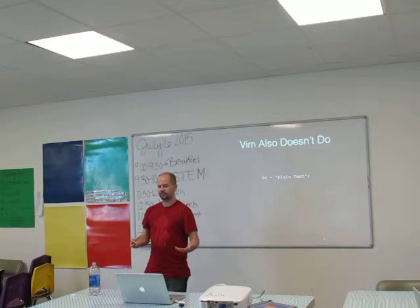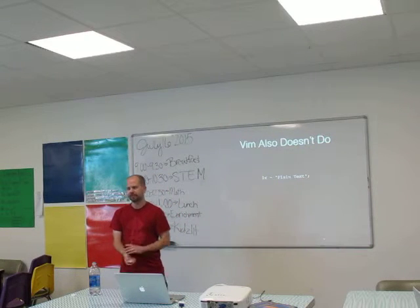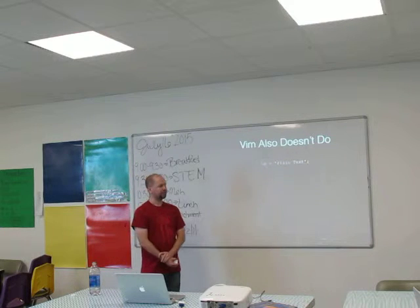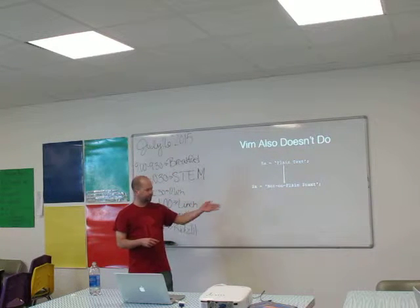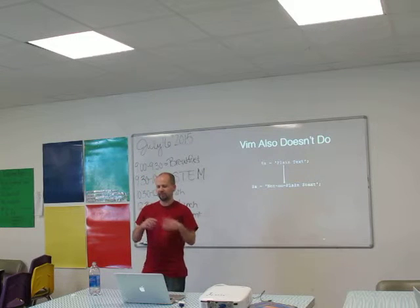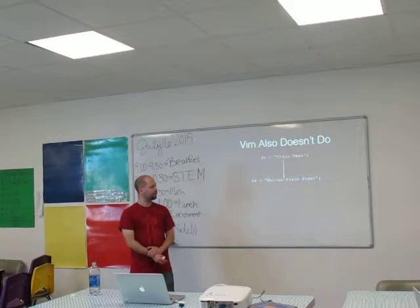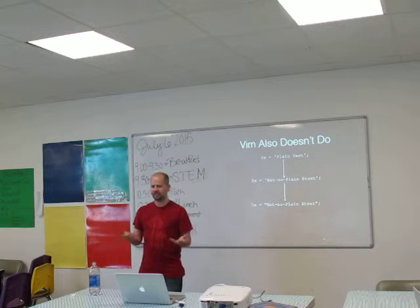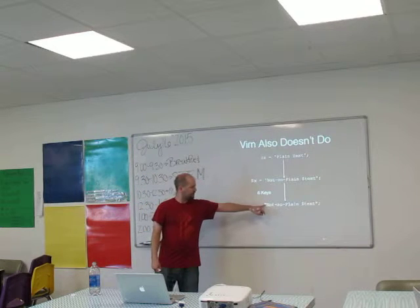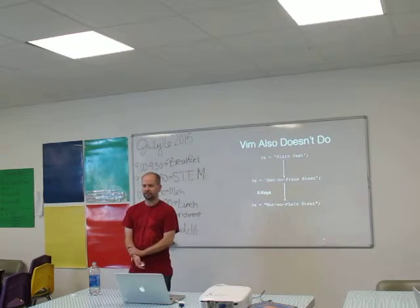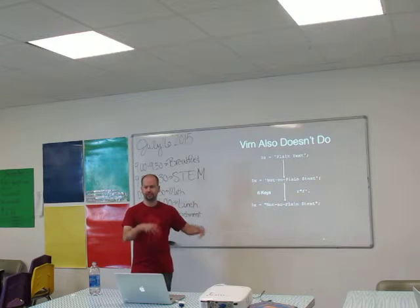Here's another example of something that's not as efficient as it could be in Vim. If you've got plain text and then you add a variable to it, in most cases you want the value of that variable, but with most languages single quotes mean don't interpret it and double quotes mean do interpret it. So you have to go and replace it with double quotes around either side. In an idealized case where your cursor starts at the right spot, you can't really do this in anything less than six keys.